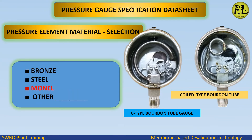Pressure element material selection. Options include bronze, steel, and monel, among other materials. We select monel for this application.